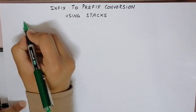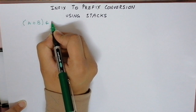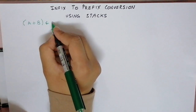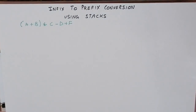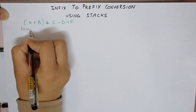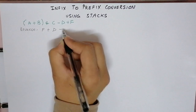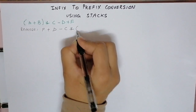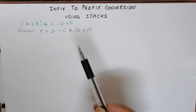Let's take an example expression: A plus B multiplied by C minus D plus F. We have this infix expression and want to convert it into the prefix expression. The first step for performing this conversion is to reverse the given expression. By reversing it, what we get is F plus D minus C multiply by B plus A — that is exactly the flipped version of the given expression.